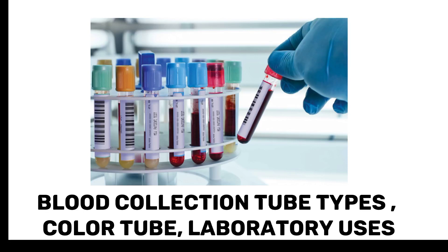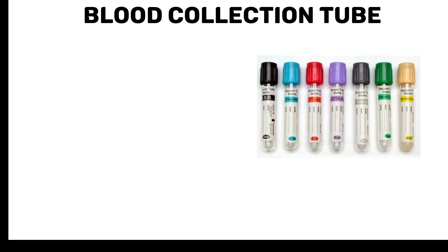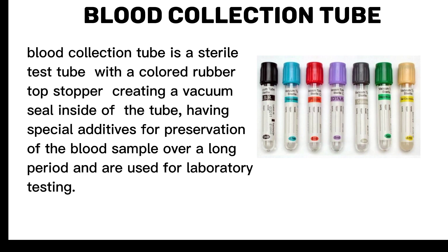Blood Collection Tube Types. A blood collection tube is a sterile test tube with a colored rubber top stopper, creating a vacuum seal inside the tube. It has special additives for preservation of the blood sample over a long period and is used for laboratory testing.